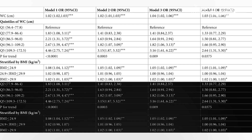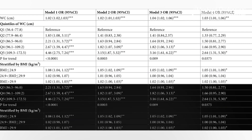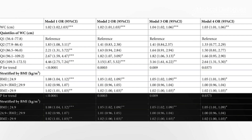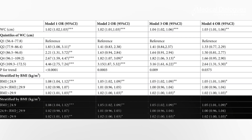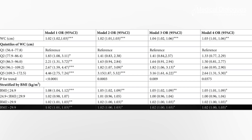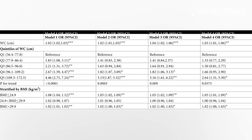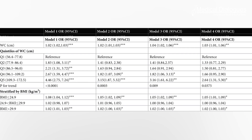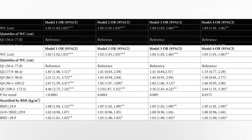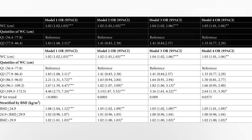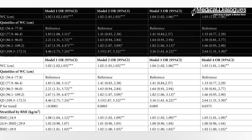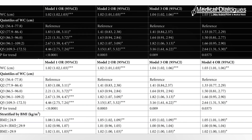Waist circumference was positively associated with female infertility independent of BMI, after adjusting for BMI and other potential confounders. In a fully adjusted model, for every 1 cm increase in waist circumference, the risk of infertility increased by 3%. When waist circumference was divided into 5 equal groups, women in the highest quintile had 2.64 times the risk of infertility compared to those in the lowest quintile.